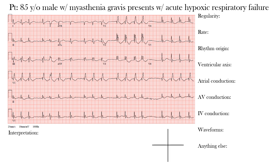One of the easiest ways to assess regularity is by finding the R waves. Looking at the V5 rhythm strip, here's one R wave — the distance to the next is called an R-to-R interval. We look at whether those intervals are consistent throughout and of equal duration. Looking across this EKG, you can clearly see these are not the same duration from one R wave to the next. The R-to-R intervals vary throughout.